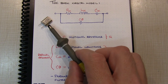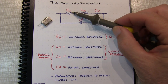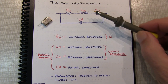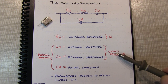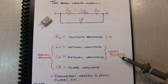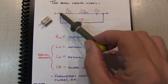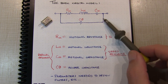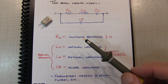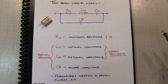A crystal can be modeled with this fairly simple circuit. The motional resistance, motional inductance, and motional capacitance really determine the series resonant point of the crystal and the Q of that crystal. And then those components, along with the holder capacitance, typically determine the parallel resonant point of the crystal.